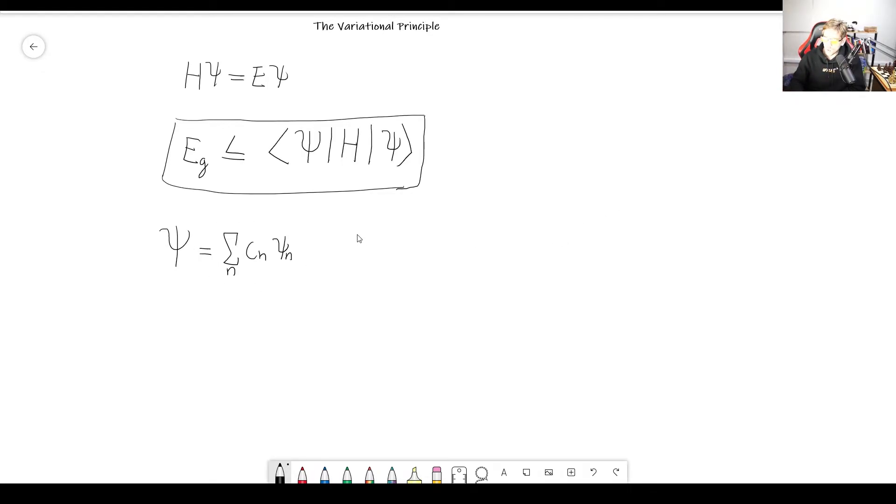So doing that, we can now find this expectation value, or we can rewrite it, actually. So that expectation value, instead of writing just psi, we're going to write what we just did here. So sum over, and because we have two psis, we have to use two different letters. So let's use M here. So C_n, M, psi of M, and then the Hamiltonian is acting on this same thing, except that it's going to be N.